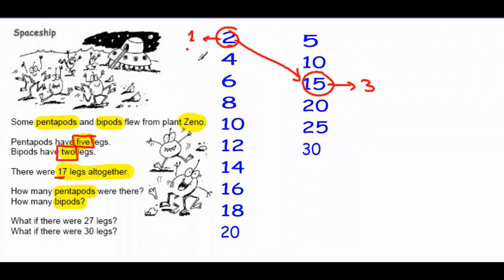So the first solution is one pipod and three pentapods. This is the first solution.